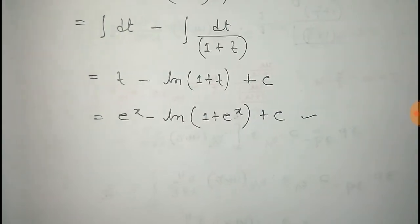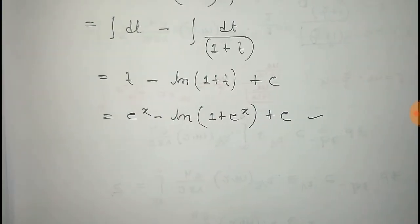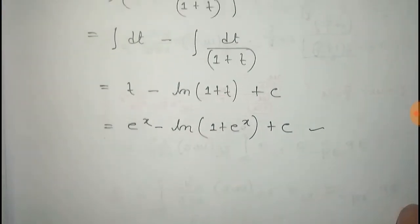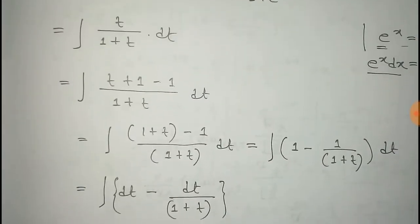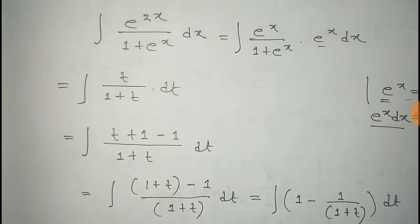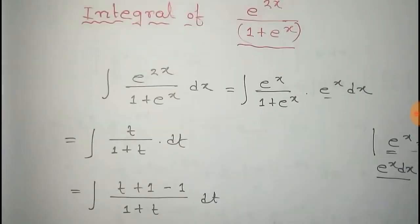Thus we get the value of the integral of e to the power 2x by 1 plus e to the power x dx, which is e to the power x minus log of 1 plus e to the power x, plus c.